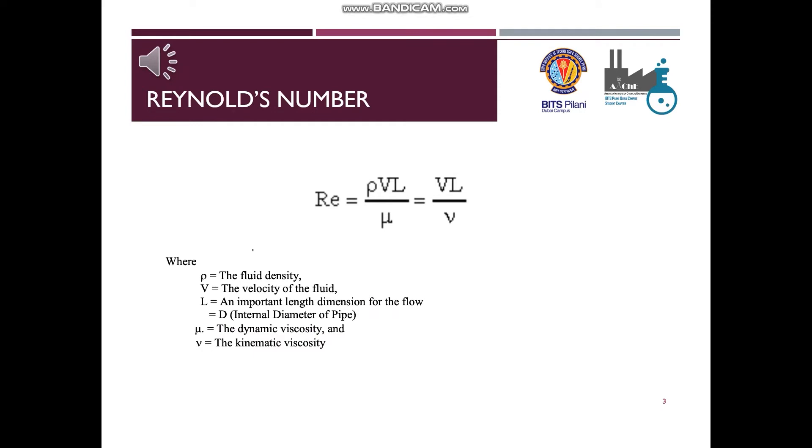Now let us see what is Reynolds number. Reynolds number provides a useful way for characterizing the flow. It is defined as the ratio of rho V L and mu, where rho represents the density, V represents the velocity of the fluid, L is an important line dimension for flow, and mu represents the dynamic viscosity. Alternatively, Reynolds number can be expressed as a ratio of V L and nu, where nu represents the kinematic viscosity.